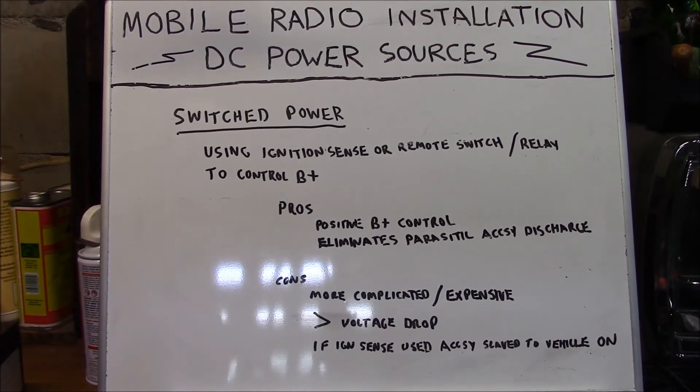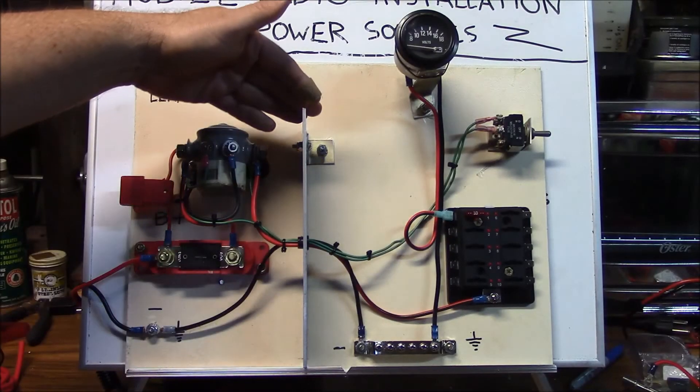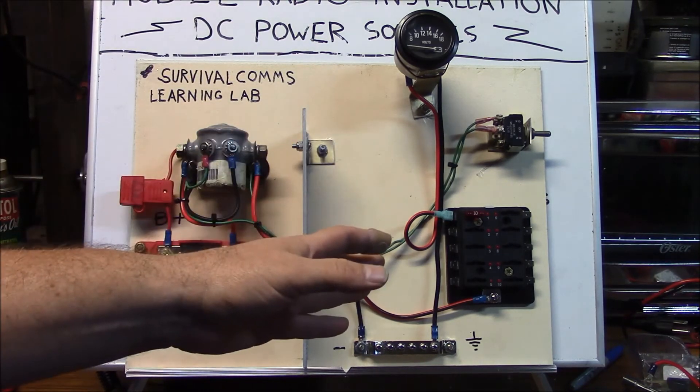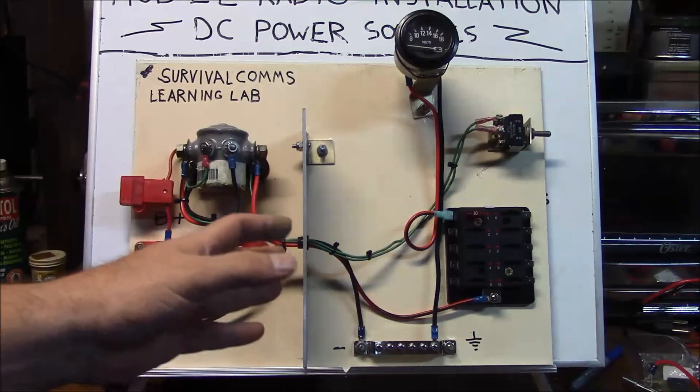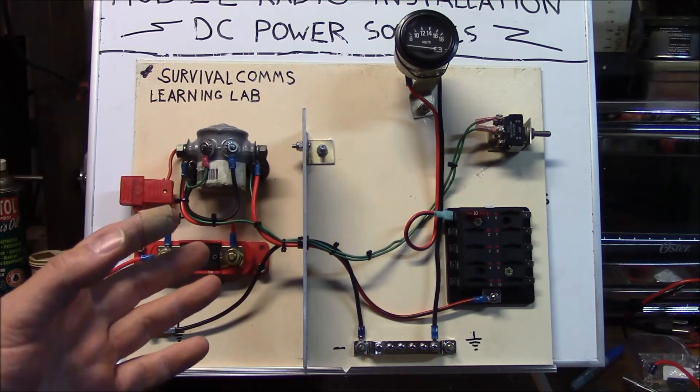There is a greater chance of having greater voltage drop in a circuit like this, however if you pick components carefully that amount of voltage drop is really inconsequential. Another disadvantage can be that if ignition sense is used your accessory will be slave to the vehicle being in an ignition state. This system provides positive control of all of your accessory DC circuits and your accessory DC distribution system with a simple toggle switch and it allows for you to expand your DC accessories in your vehicle or vessel.